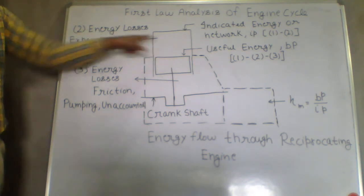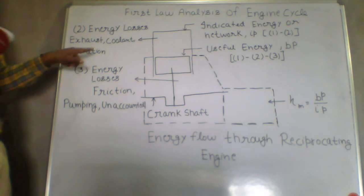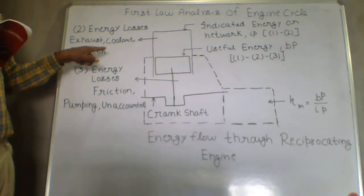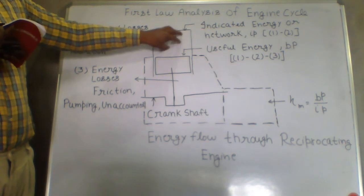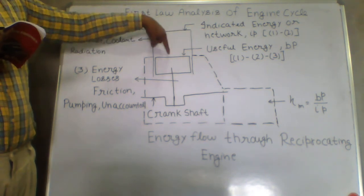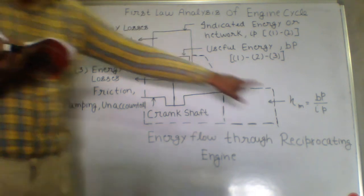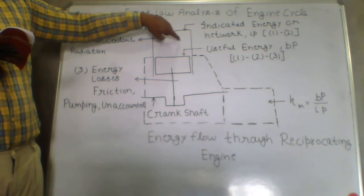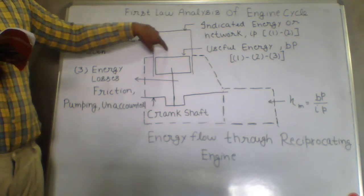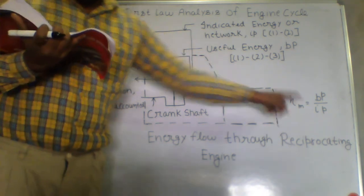Radiation is also one of the losses. Some of the energy of this fuel is lost in the form of radiation. The heat energy which is converted to power at this stage is called indicated power. Whatever the energy is converted into power at the piston surface is called indicated power.